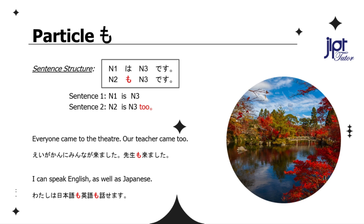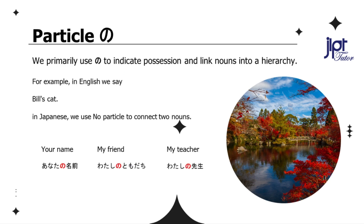With this, we are about to start our last lesson for today's lecture, which is about particle no. Particle no. We primarily use no to indicate possession and link nouns into a hierarchy. For example, in English we say 'Bill's cat' — both Bill and cat are nouns, and we use apostrophes to connect them. Similarly, in Japanese we use no to connect two nouns. Examples: Your name — あなたの名前. My friend — 私の友達. My teacher — 私の先生. Just remember that particle no shows the relation of one noun to another.